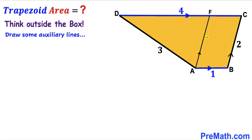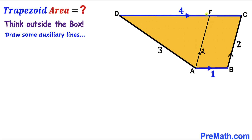I have drawn line AF parallel to side BC. Since these sides are parallel to each other, side AF is equal to side BC. If BC is 2 units, then AF is 2 units as well. Furthermore, segment FC is going to equal length AB — if AB is 1 unit, then segment FC is 1 unit as well.